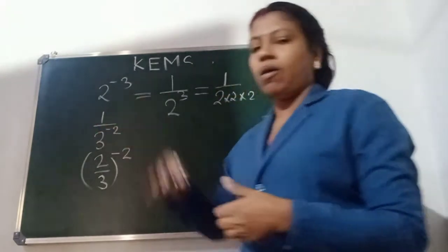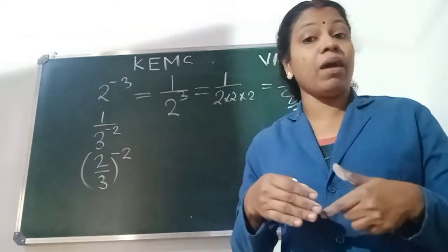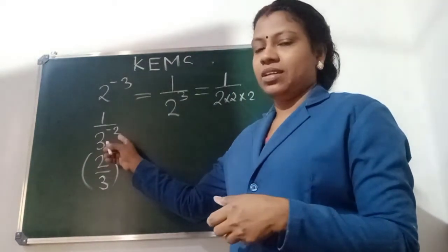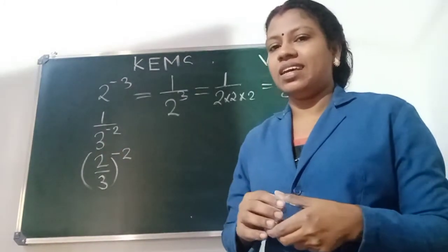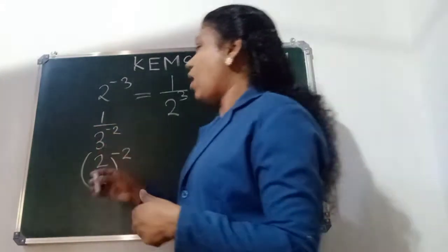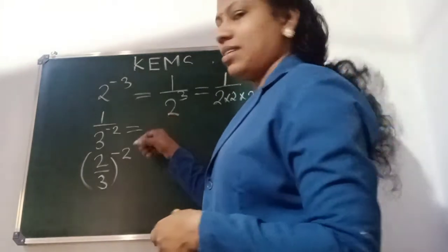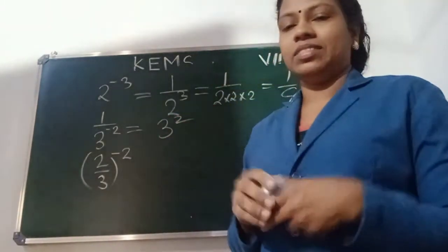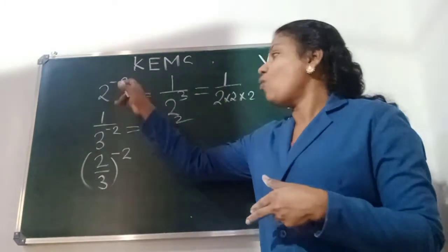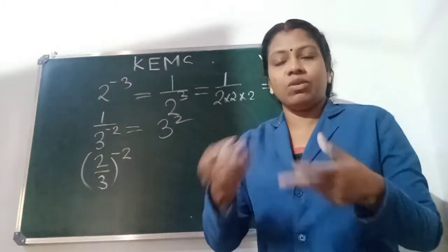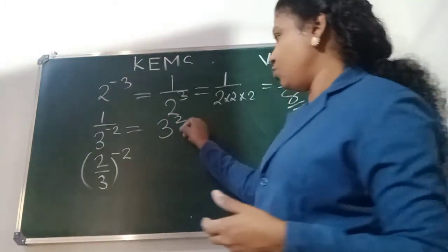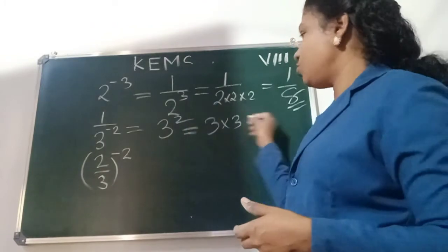Second example: 1 by 3 power minus 2. Here A power minus M rule applies. Since 1 by A raised to minus M equals A raised to M, we get 1 by 3 raised to minus 2 becomes simply 3 raised to 2, which equals 3 into 3 = 9.